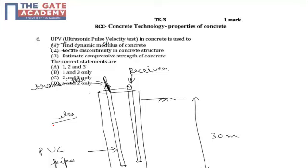Estimating compressive strength of concrete has nothing to do with UPV. Hence, D is the correct choice for question number 6. Thank you.